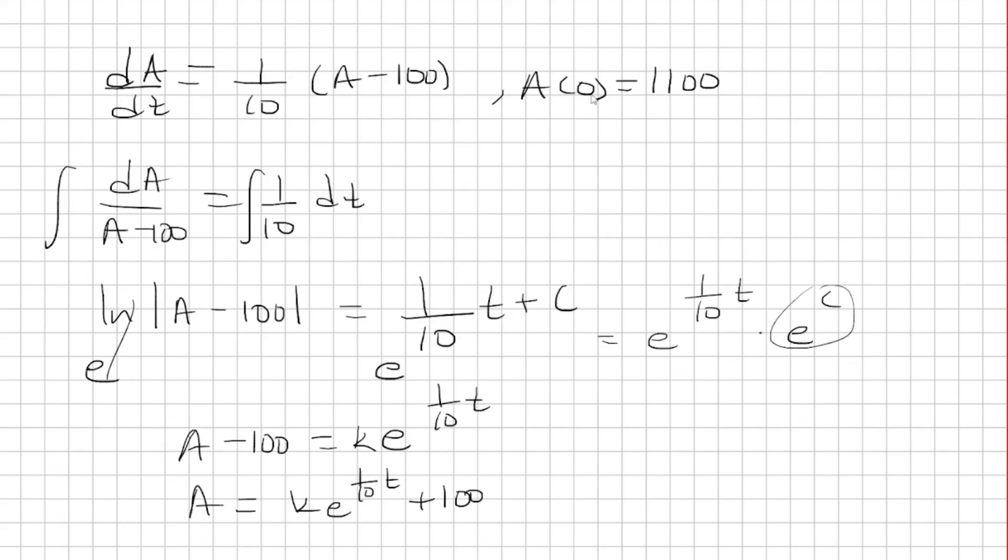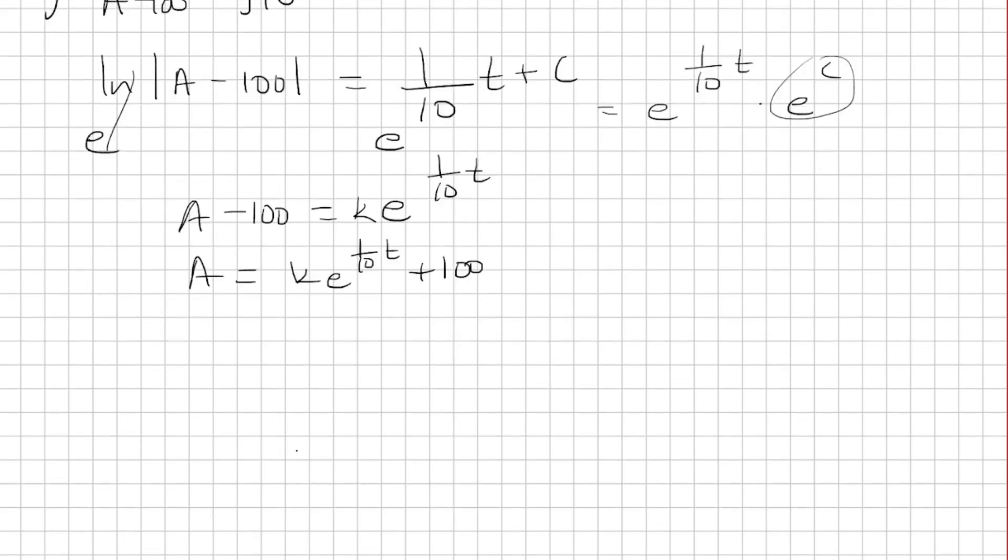Finally, we want to satisfy the initial condition. So we're going to plug in 1100 for A and then t equals 0. When t equals 0, e to the 0 is just 1. So we get k is 1,000.